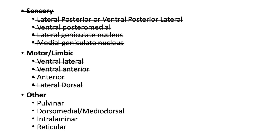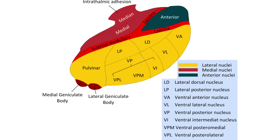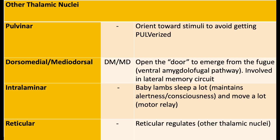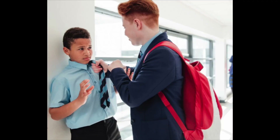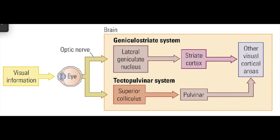And finally, let's cover some other thalamic nuclei. First, the pulvinar is largely related to visual processing and helps us pay attention to visual cues. I remember this by thinking of a bully who wants to pulverize me, so I pay attention to visual cues to avoid getting pulverized. The pulvinar is part of the tectopulvinar system, which is part of the extrastriate or extrageniculate pathway.